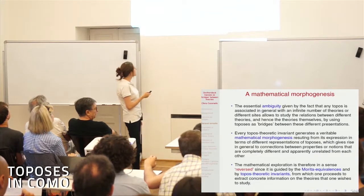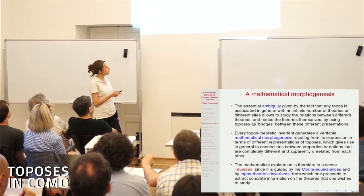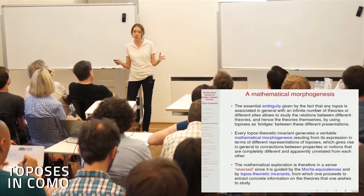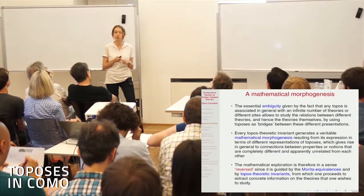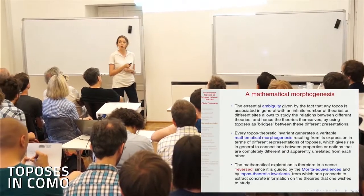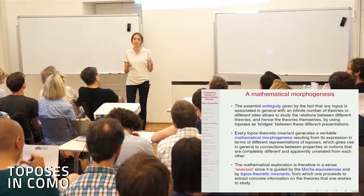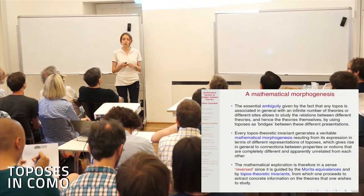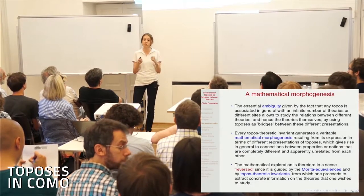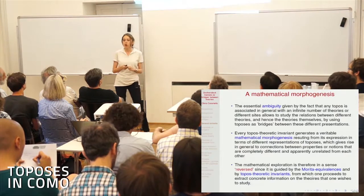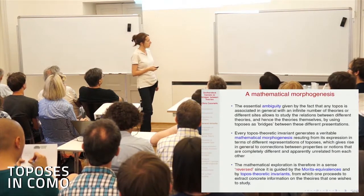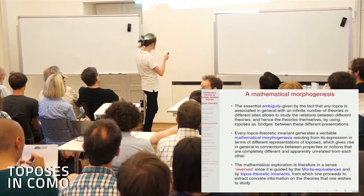Yesterday we remarked that the expression of a given topos-theoretic invariant in terms of different presentations — in particular in terms of different sites for a given topos — can be interpreted as a sort of mathematical morphogenesis, in the sense that we have a unity which lies at the topos-theoretic level and different concrete manifestations of this unity in different concrete contexts represented by the presentations.